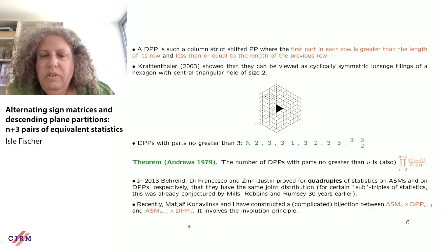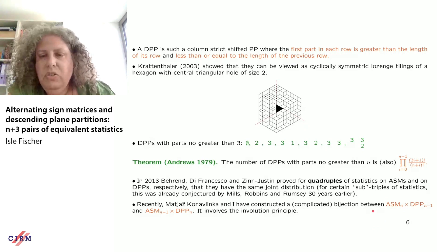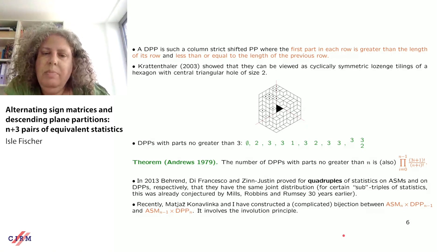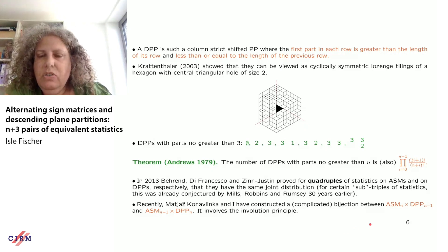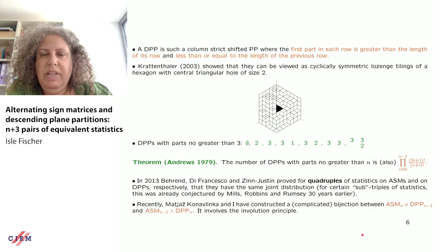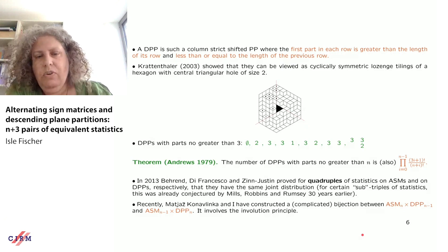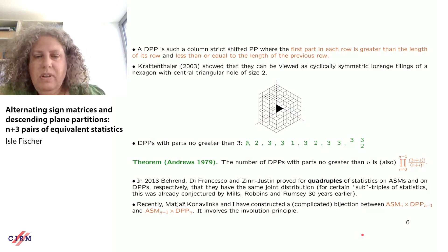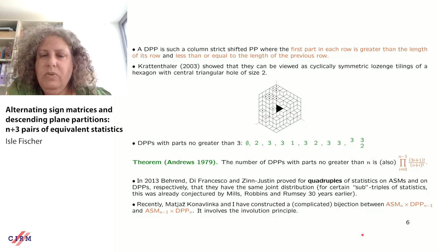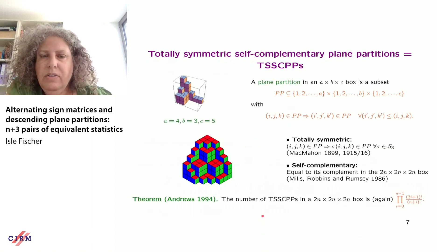Very recently, together with Matias Konvalinka, I constructed a bijection between ASM_n and DPP_n — the set of descending plane partitions with parts no greater than n. This bijection also implies by induction that there is the same number of n×n ASMs as DPPs, but it's a really complicated bijection involving a generalization of the involution principle, and it's not the clean bijection we want.